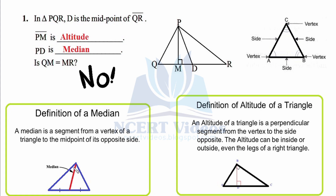A triangle can have three medians: one connecting one vertex to the center of the opposite side, a second connecting another vertex to the center of its opposite side, and a third connecting the remaining vertex to the middle of its opposite side.